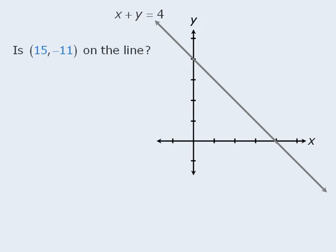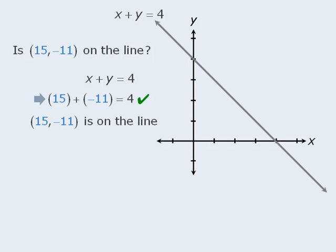What about the point (15, negative 11)? To find out, we'll take the equation of the line and plug 15 in for x and negative 11 in for y, and see if this equals 4. Since it does equal 4, we can see that the coordinates of this point satisfy the equation, which means it does lie on the line.